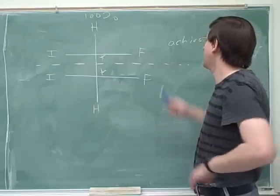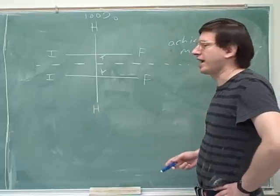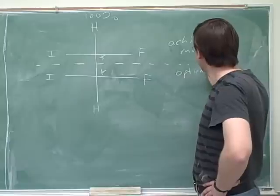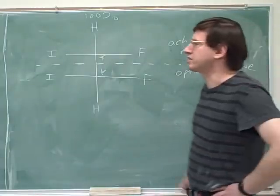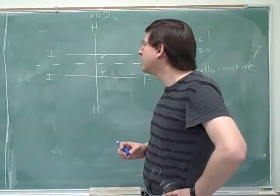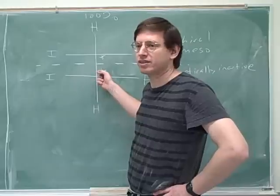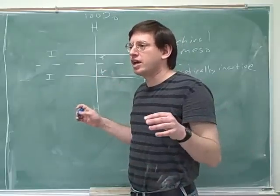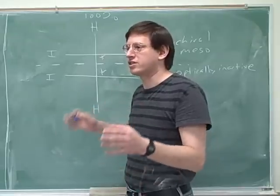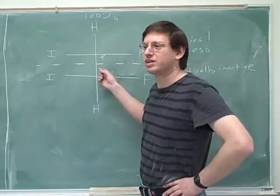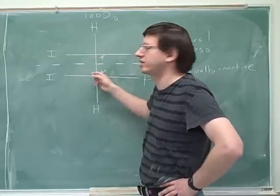There's a special name for a molecule that's achiral even though it has stereocenters: meso. So this is a meso compound, and this solution would be optically inactive. This is similar to what we saw before — with two enantiomers, both had stereocenters and those cancel each other out. Here it's the same thing except the two stereocenters are in the same molecule and they're still canceling each other out. The way two enantiomers cancel each other out is analogous to the way two stereocenters in the same meso molecule cancel each other out.